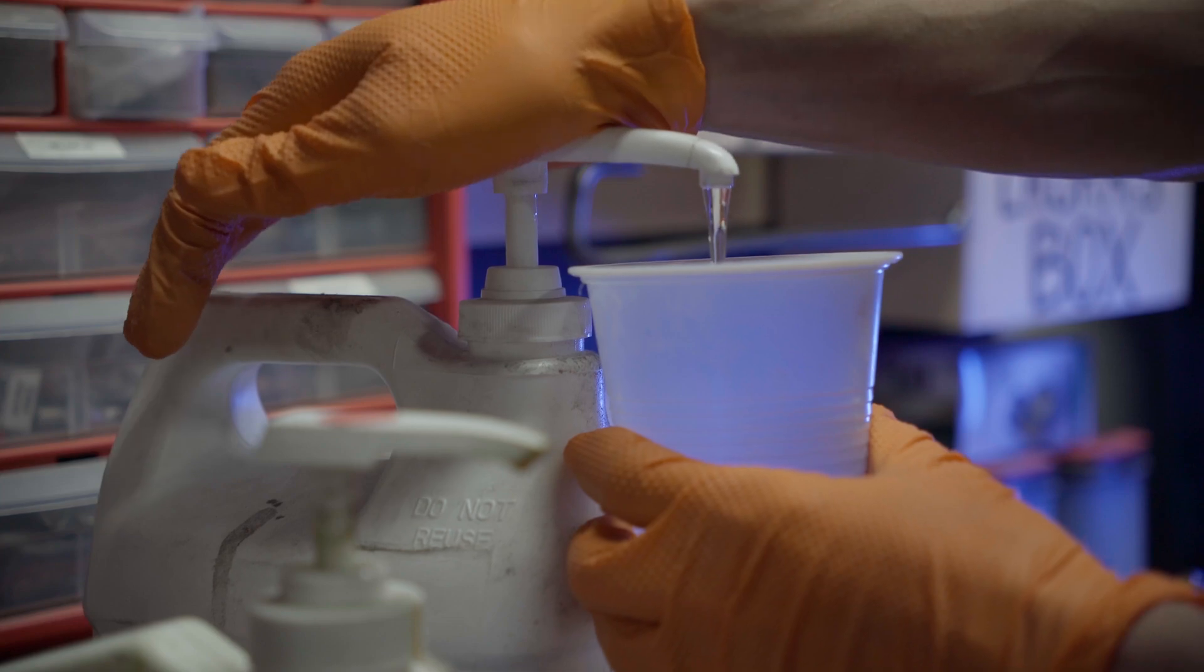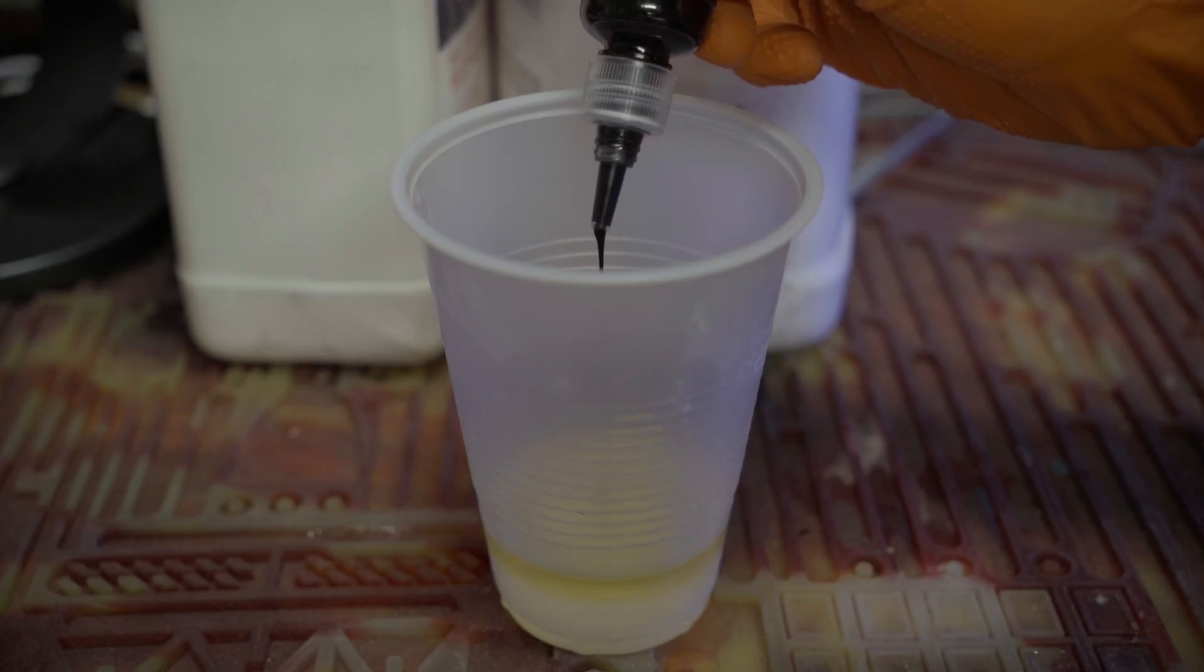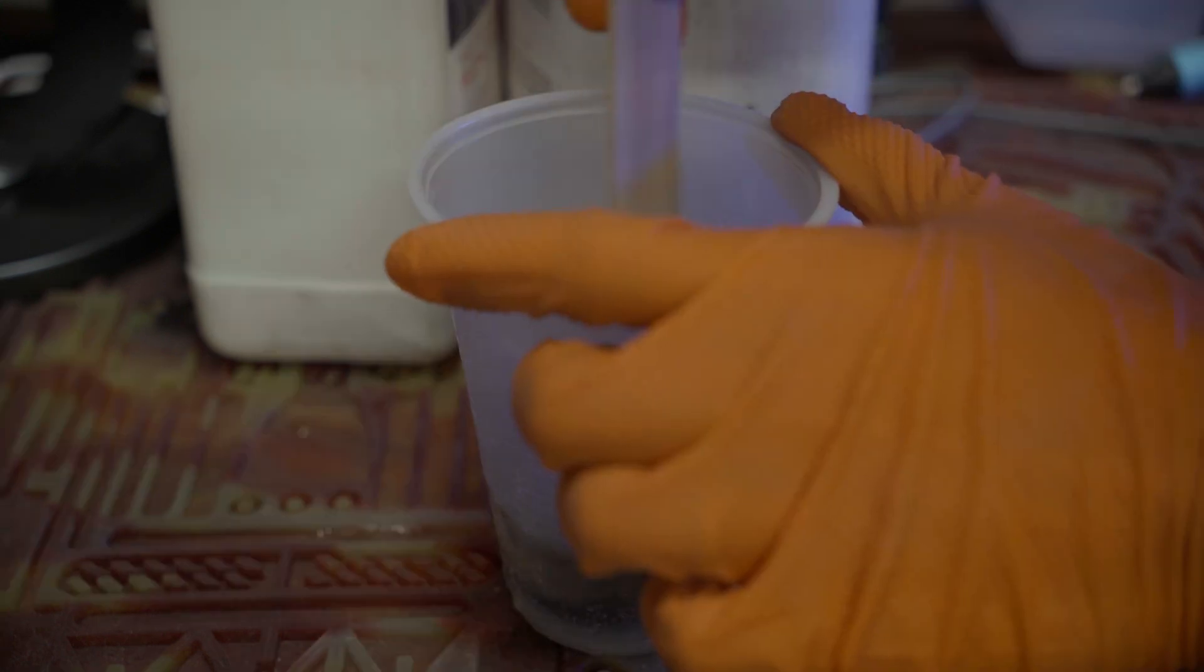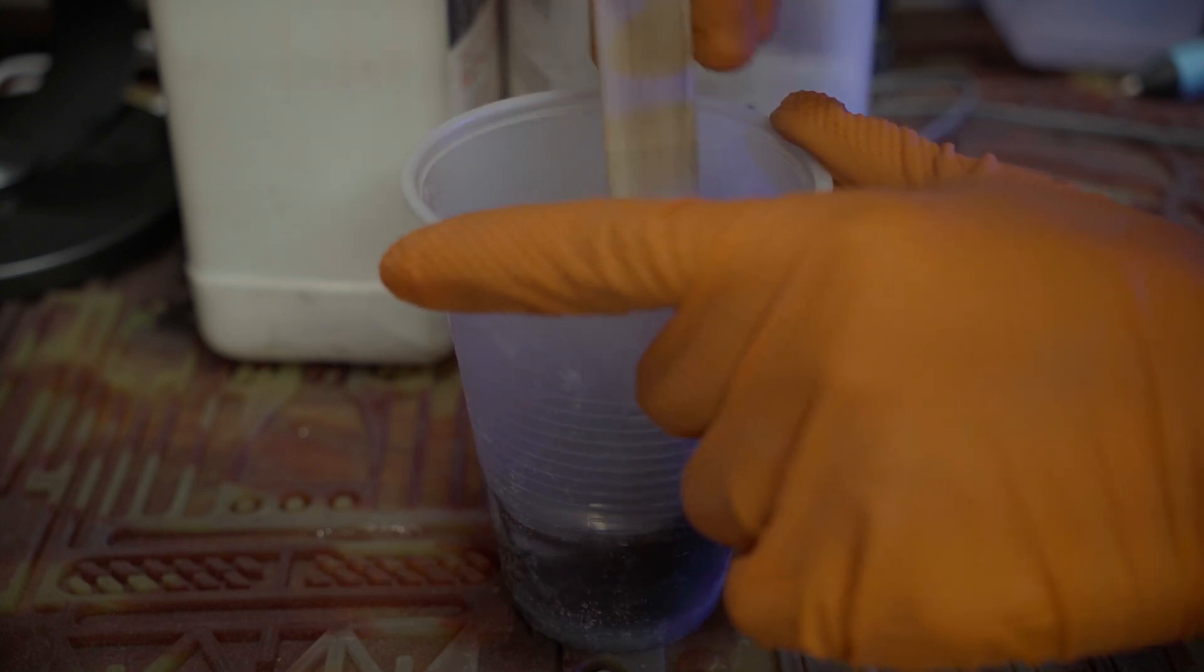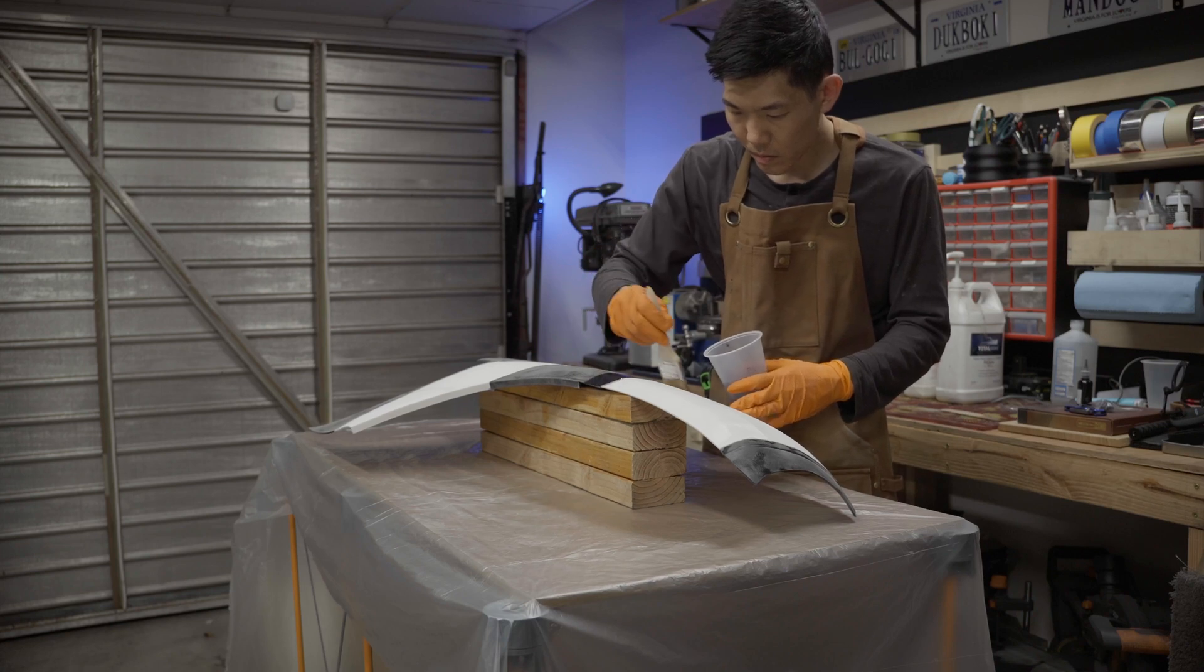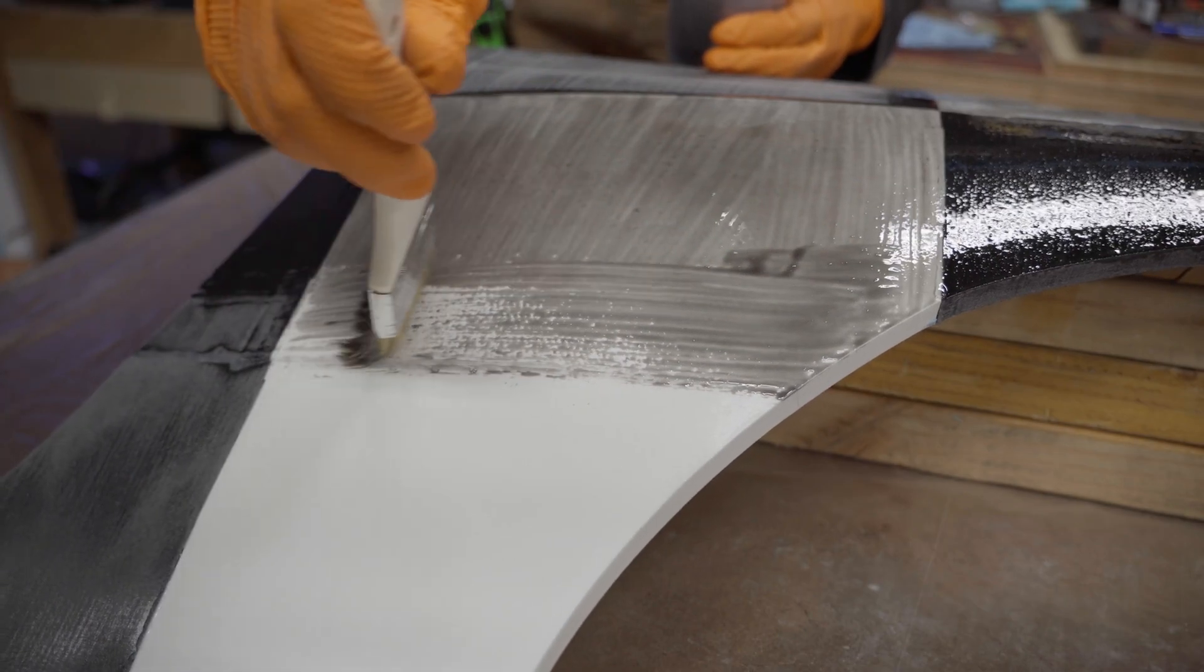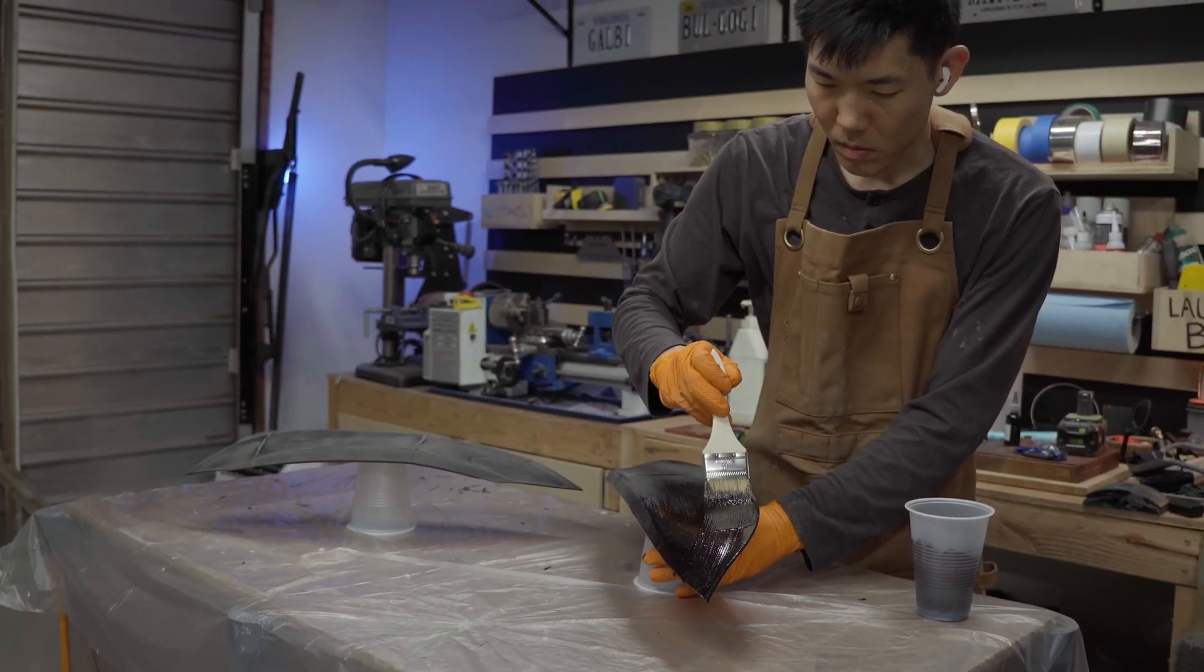I'm using Total Boat's 2 to 1 epoxy with slow hardener, which I got about 4 years ago when I first thought about doing this project. And besides the hardener turning yellow, it's still good to use, so shoutout to Total Boat. I ran out of black ASA printing the fenders, so to cover up some of the white pieces, I added black pigment to the epoxy, and I quickly realized that I should have added way more pigment. But we're not striving for perfection here, so this is going to be good enough.